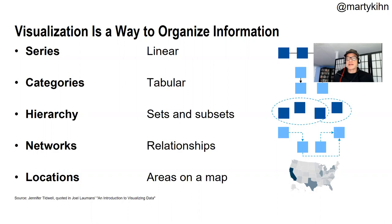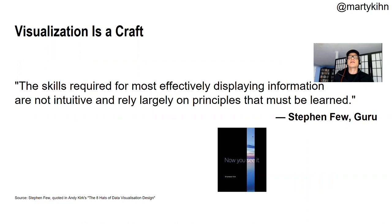There are different ways to organize information. We can do it linearly, step by step. It can be tabular — different things that relate to each other. Hierarchy, so they're related in a certain set of dominance relationships. And networks, which is maybe hierarchical relationships, and then locations, such as in geography.